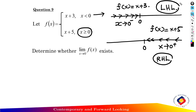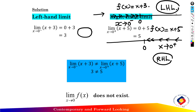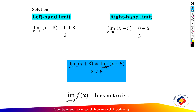First, find the left hand limit of the function. The limit as x approaches 0 from the left of f(x) equals x plus 3. Substituting, we get 0 plus 3, so the left hand limit of the function equals 3.